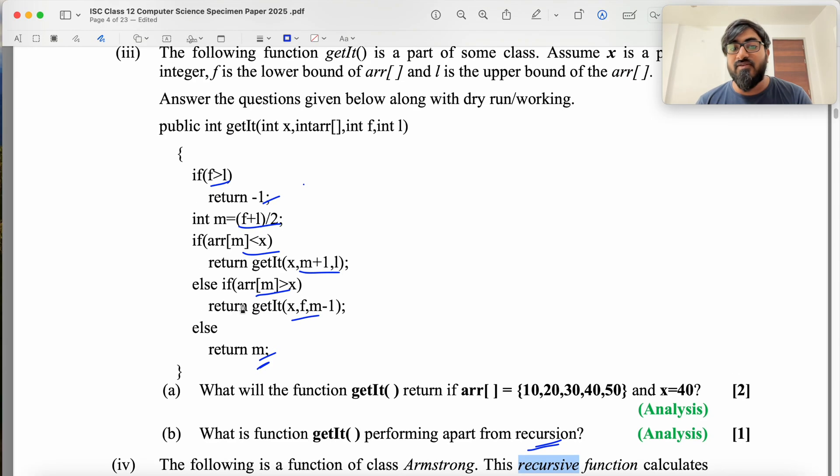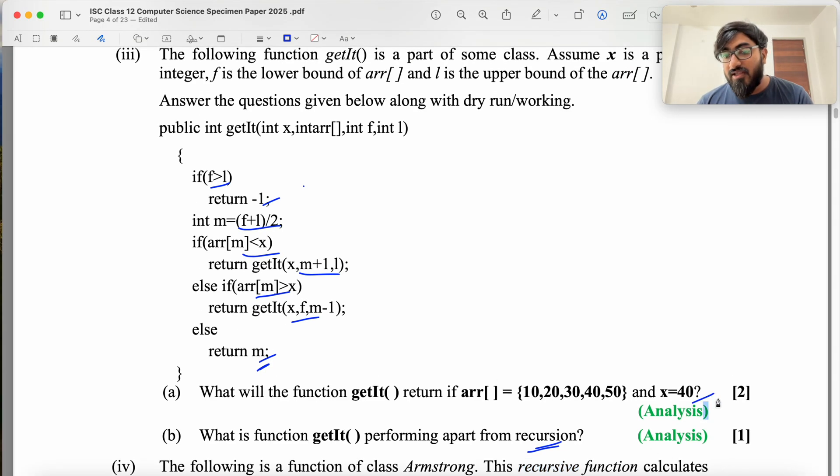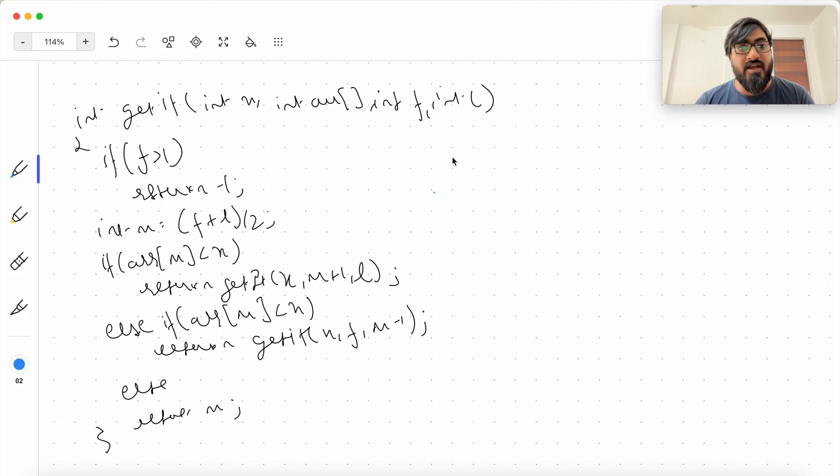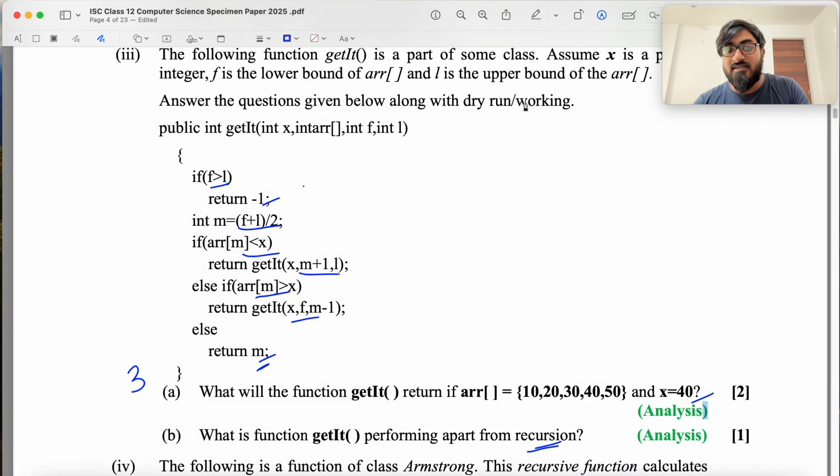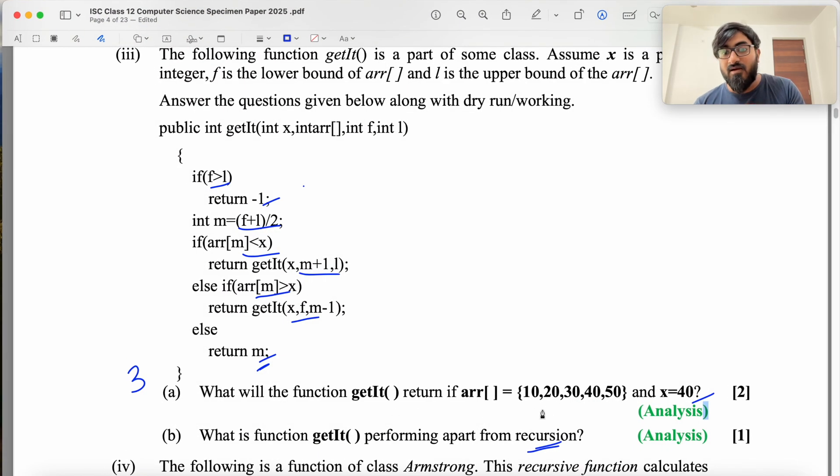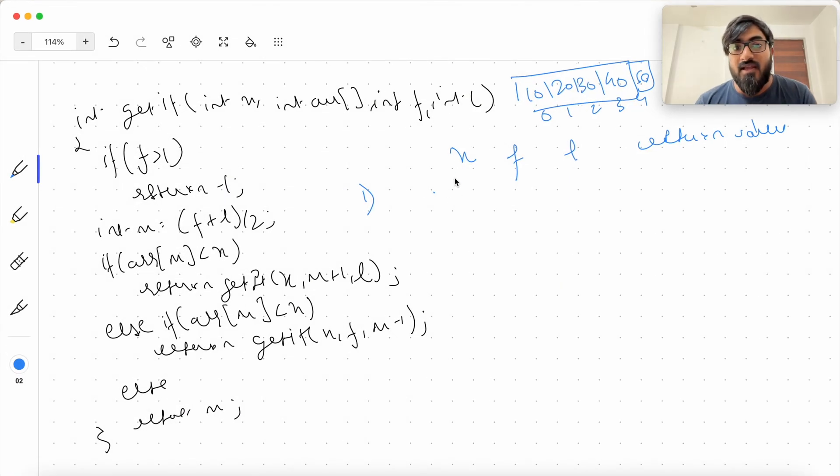Binary search what it does is basically gives you the index of the value that you're trying to find. So you're trying to find 40 in this, which is at index 0, 1, 2, 3. So the return value is 3. Now let's see how we calculate this return value. Let me just quickly try it on this. So what are the values we have? We have X, array remains the same. Array is 10, 20, 30, 40, 50. You have F, we have L and then the return value. So the first time this function is called with this array and X 40. X is 40. F is the lower bound, so 0. L is the upper bound, so 4. And then we have to find the return value.